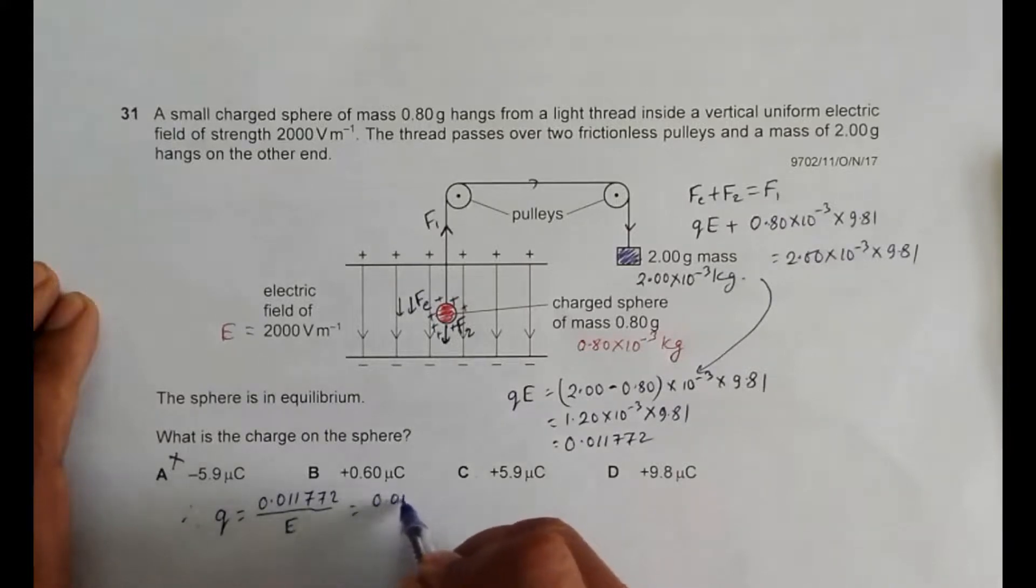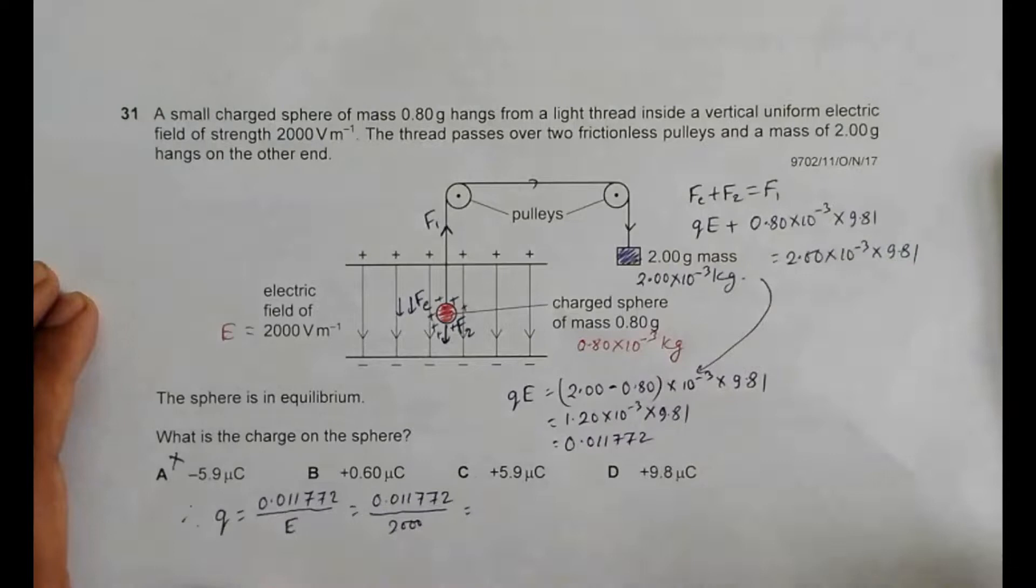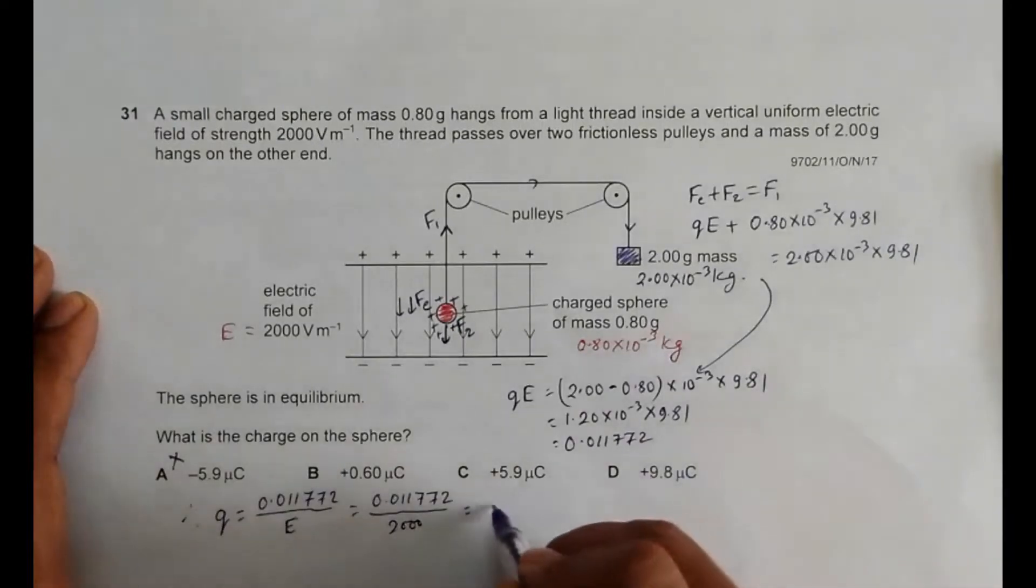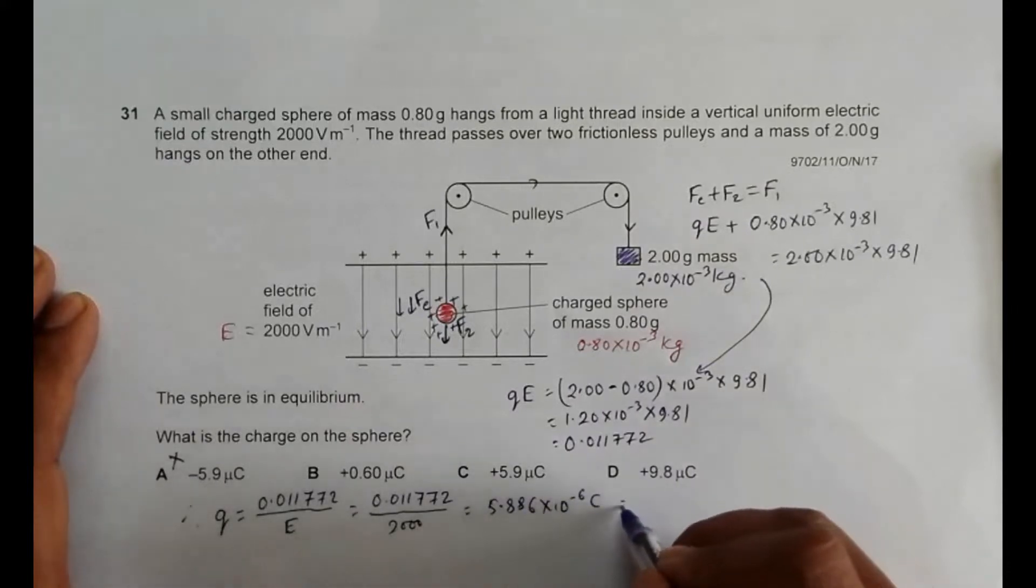And that's equal to 0.011772 divided by 2000, which gives us 5.886 into 10 to the power minus 6 coulombs.